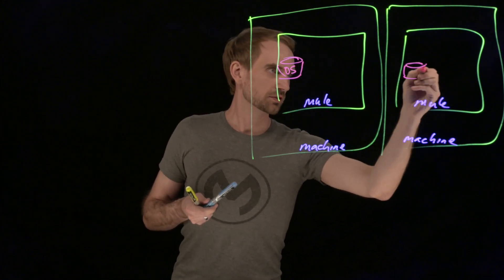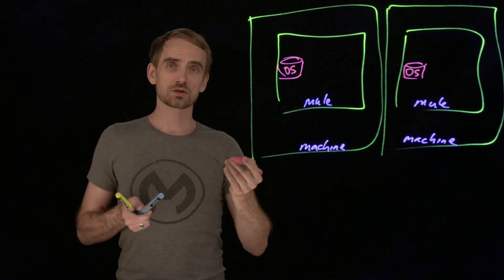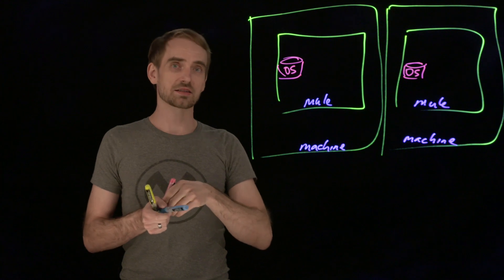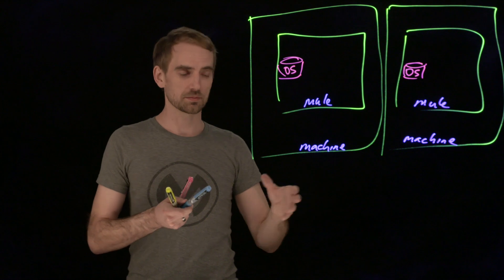And each Mule runtime has their own in-memory version, own values, own copy of everything. It doesn't actually swap any information between these different standalone Mule runtimes.